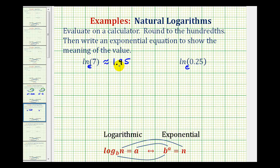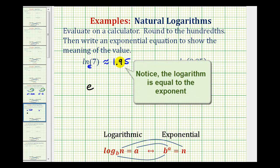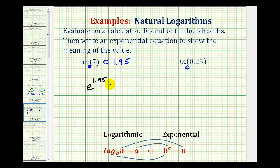To help us understand the meaning of this, we now want to write this log equation as an exponential equation. And there are some notes here to help us if we need it. But e would be the base. The exponent would be approximately 1.95. And this would be approximately equal to the number 7. We're saying approximately because we did round this. Again, e to the 1.95 would be equal to approximately 7.